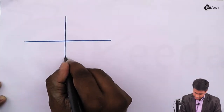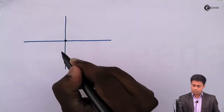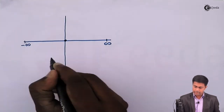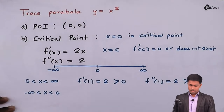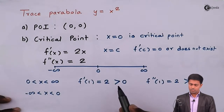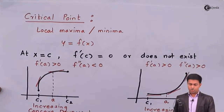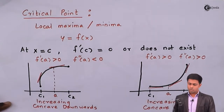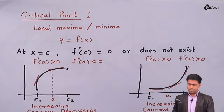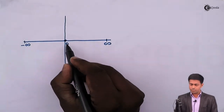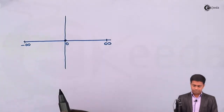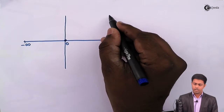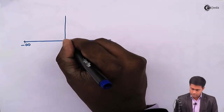Let's draw the curve. We have the x and y axes with the point (0, 0) as our point of intersection. From 0 to infinity, the curve is increasing and concave upwards — it starts at (0, 0) and extends upward toward infinity, giving us the right half of the parabola.